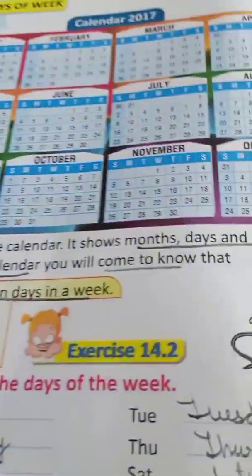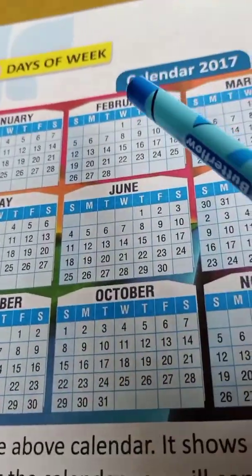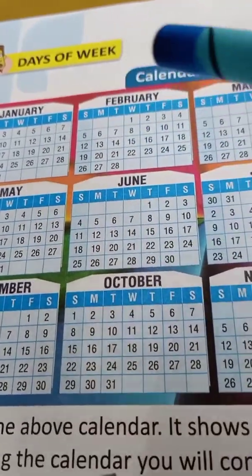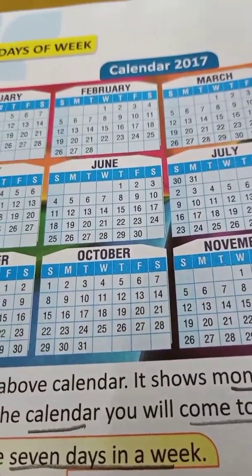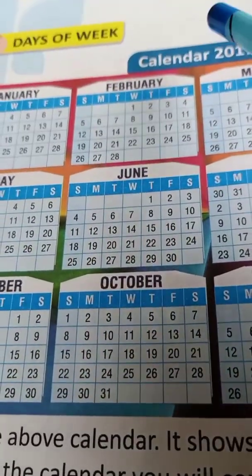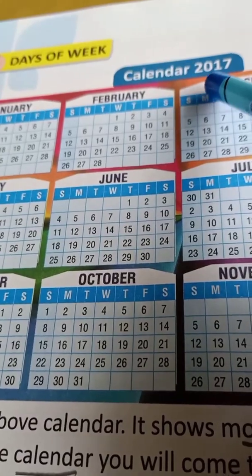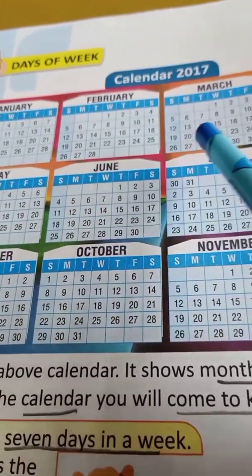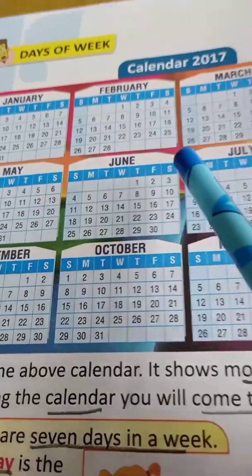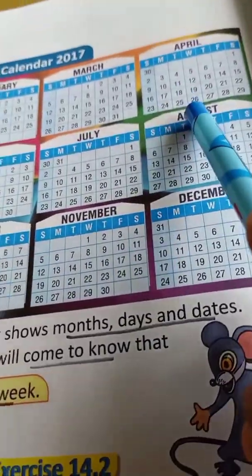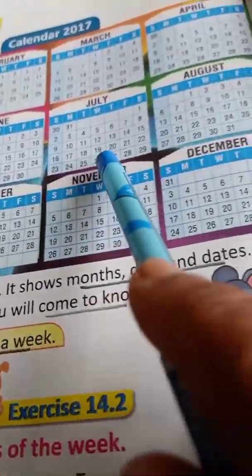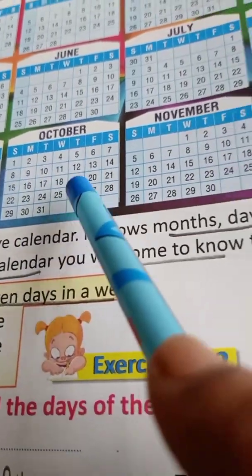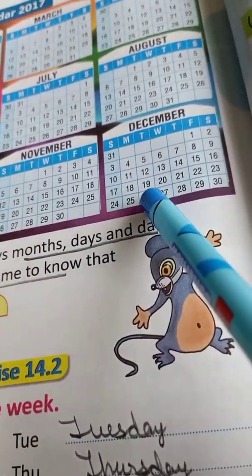Come to the next page. This is a calendar. Days of the week. On this page, we learn about days of the week. Here is a calendar of 2017: January, February, March, April, May, June, July, August, September, October, November, December.